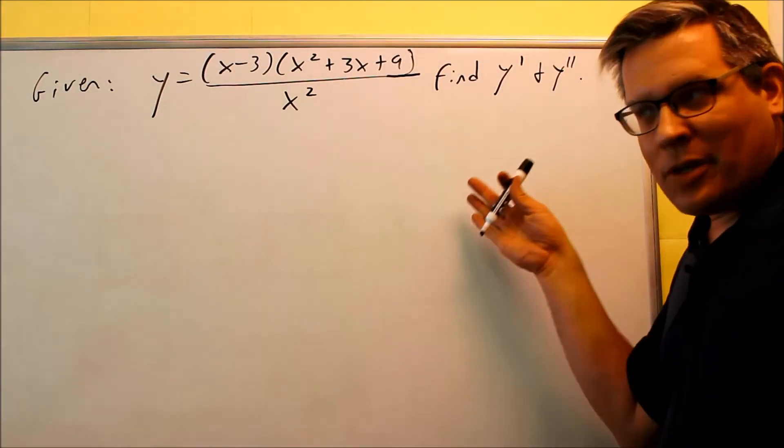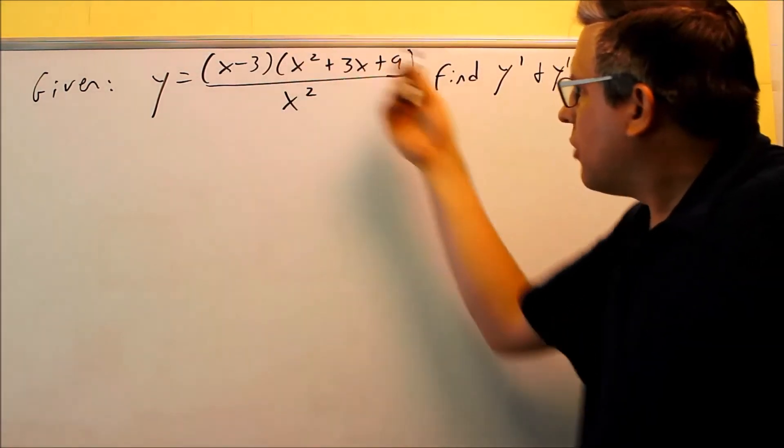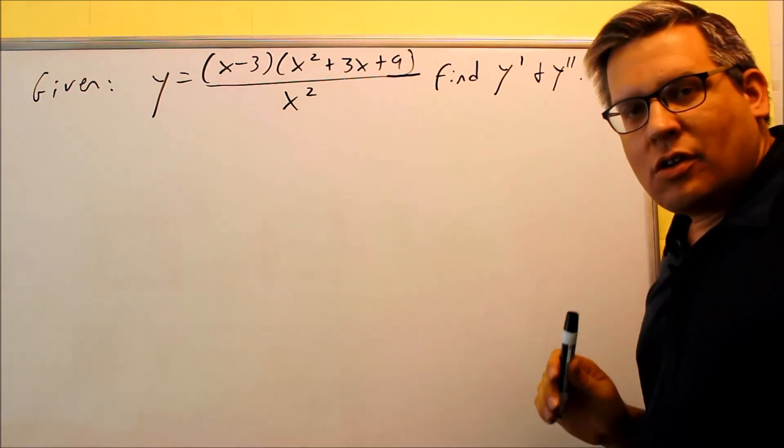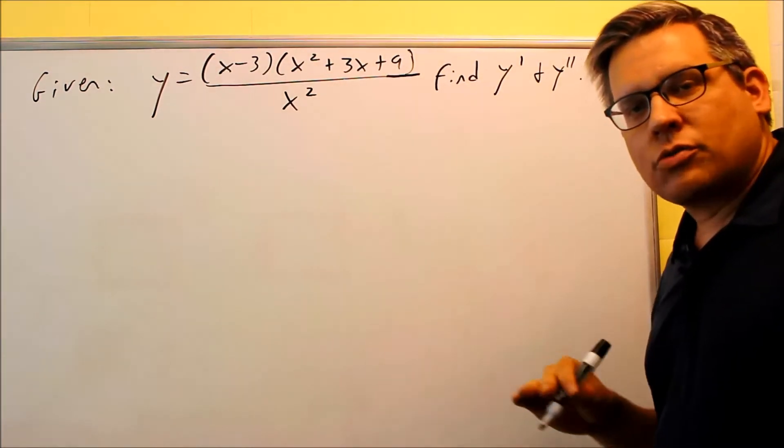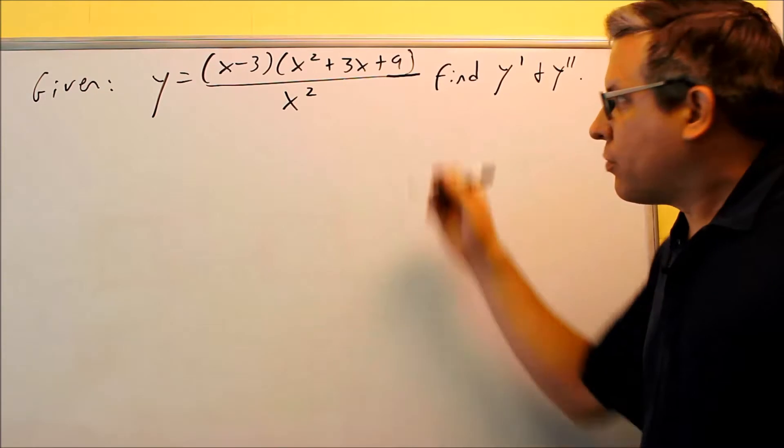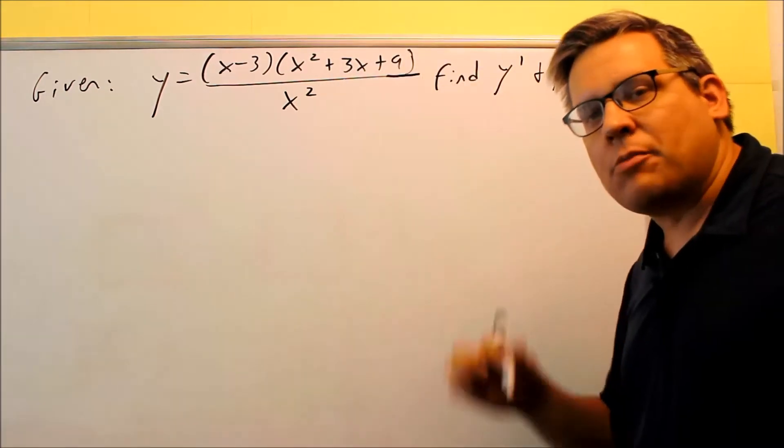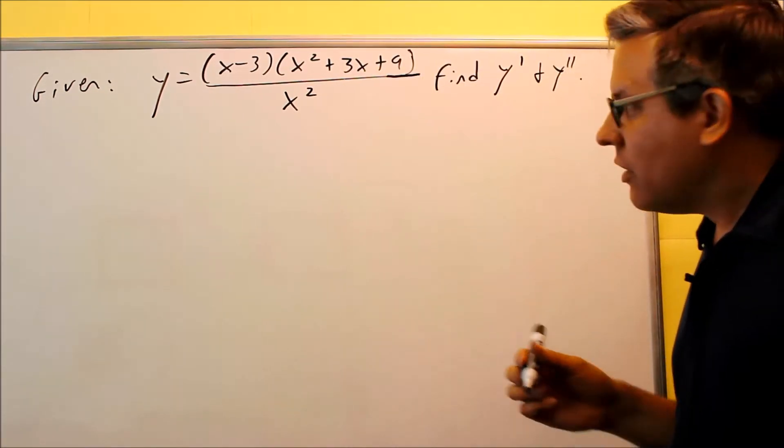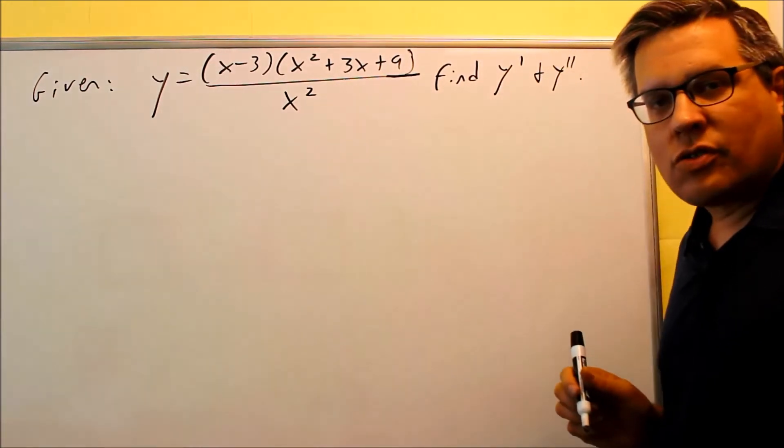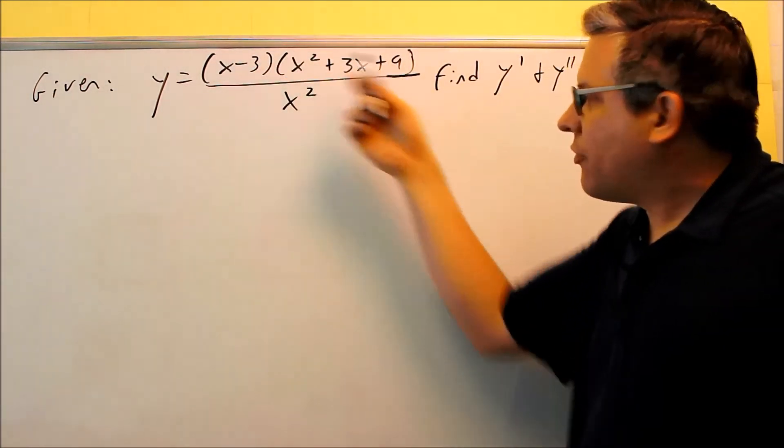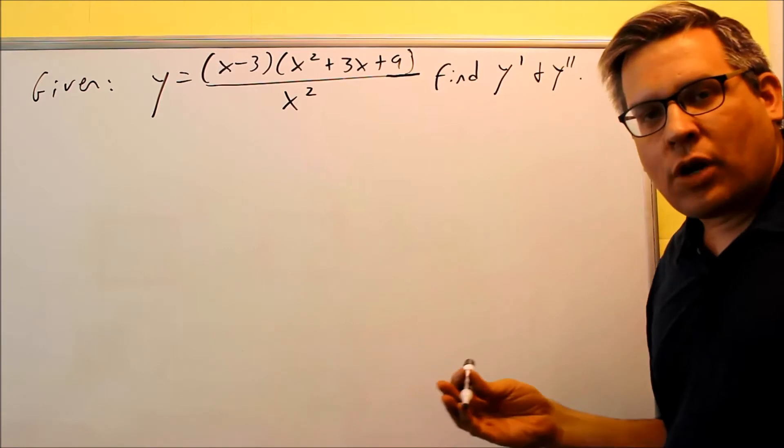Okay, so this problem looks like it might be complicated because you have two things multiplied together in division. So you might think to do a quotient rule, but then if you do a quotient rule, you'll have a product rule combined with a quotient rule, it might be more complicated. So instead of doing all that, there's a strategy that you can do. Some problems you can simplify first, and it's going to make the whole process easier.